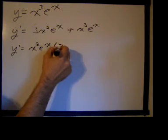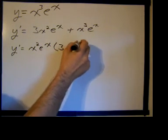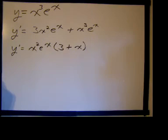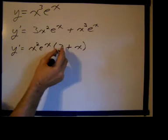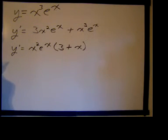That would just leave a 3 plus x. That would make it a lot easier to see where that was equal to 0, to be honest with you. But anyway.